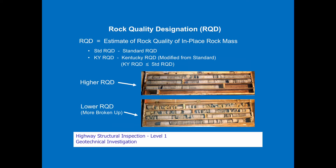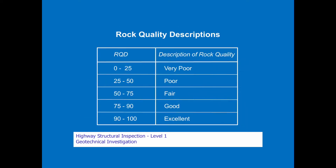In the first picture you've got a higher RQD — you can see a lot of rocks together with big long core run lengths — and then a lower RQD is the one that's all more broken up. Rock quality descriptions: RQD 0–25 is very poor, and as you increase the number you increase the quality, up to excellent.